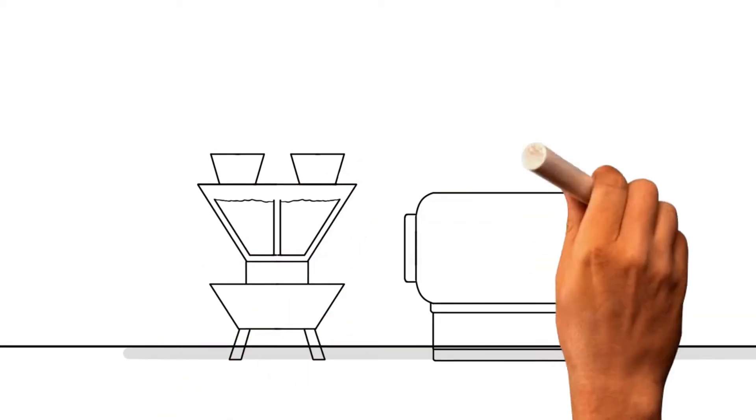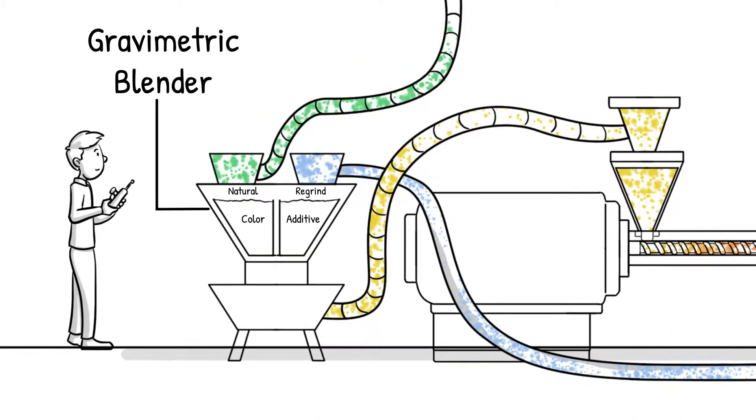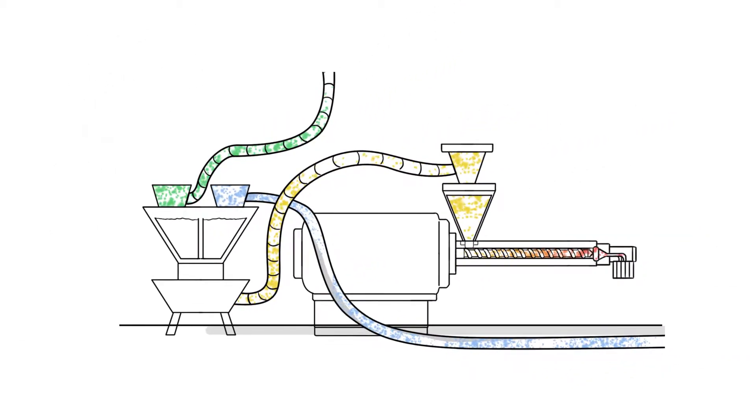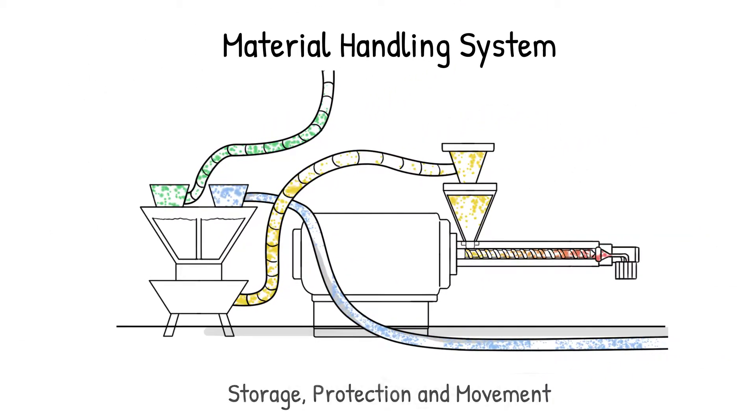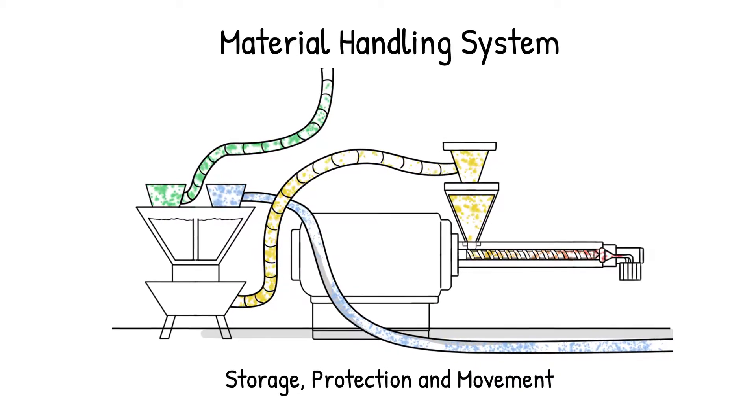The extrusion blow molding process begins when plastic and color are mixed in a blender, then conveyed to the hopper. This is all part of the material handling system, which controls the storage, protection, and movement of the plastic resin through the production process.